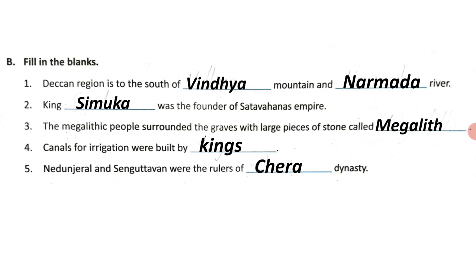Question 4: Canals for irrigation were built by kings. Question 5: Nedunjeral and Senguttuvan were the rulers of the Chera dynasty.